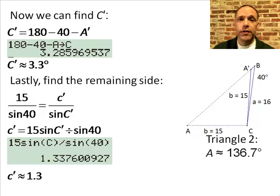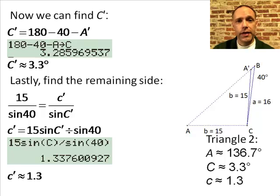Now we've solved the second possible triangle. We have the second angle A prime, the second angle C prime, and the second side c prime.